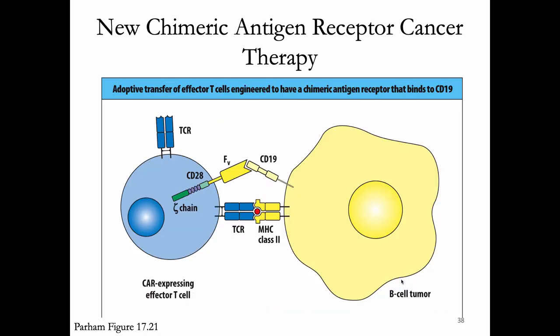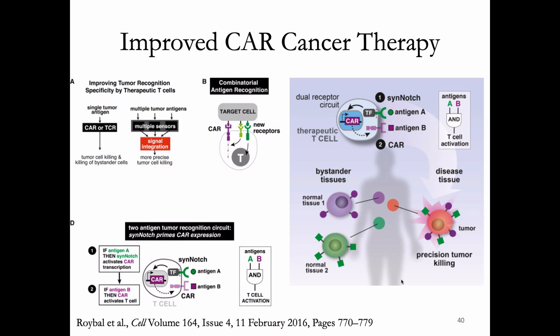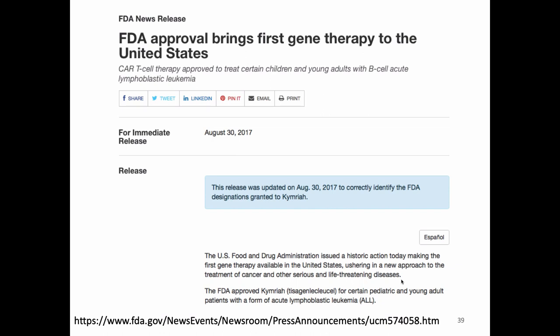In newer versions, people are making CAR cells with multiple receptors. You can have two receptors that are both on the tumor, making it more specific, or one activating receptor on the tumor combined with an inhibitory receptor that's on normal cells — so normal cells inhibit but tumor cells don't inhibit and do activate. People are trying all sorts of new combinations and doing combinatorial things. One of them is even called TRUCK.